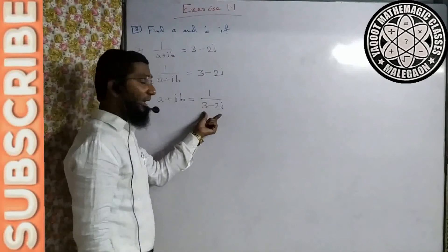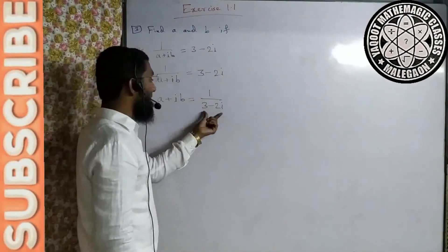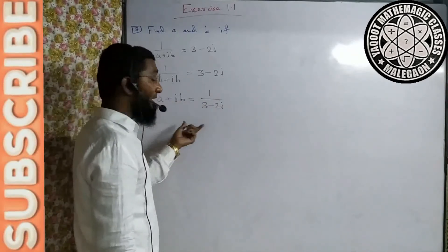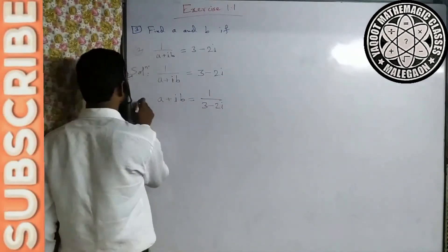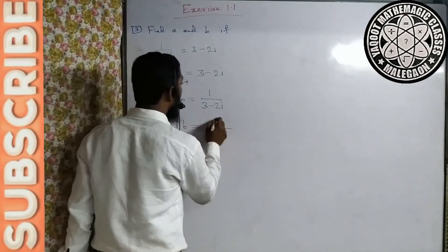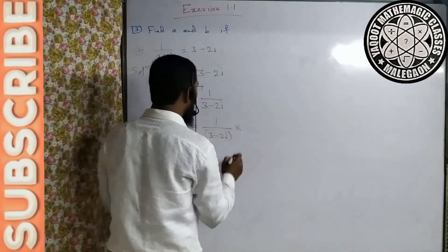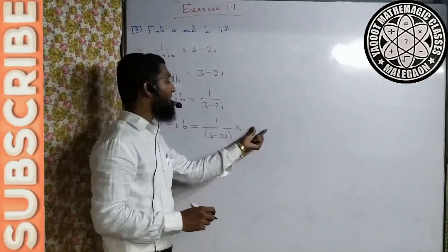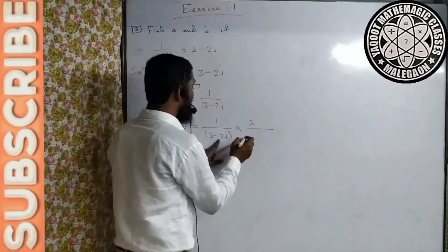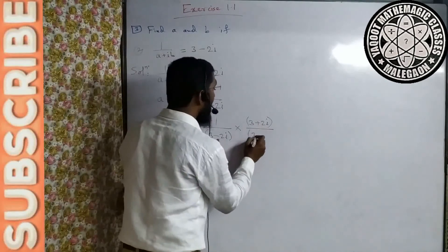Iska conjugate lekar hum isko multiply-divide karenge taake aapka yeh complex number ek simple complex number dikhne lag jaye, taake complex number ki equality ka use karke hum a aur b find kar sake. Denominator ka complex number 3 minus 2i — isi ka conjugate lenge aur is conjugate se multiply bhi karenge, divide bhi karenge.